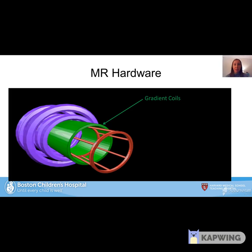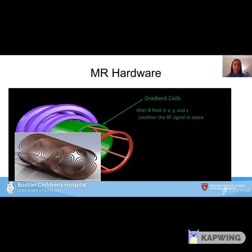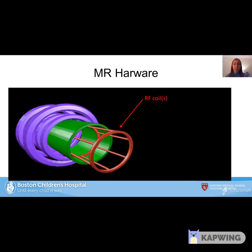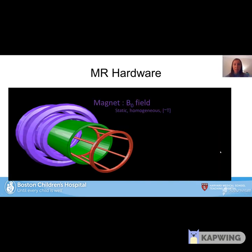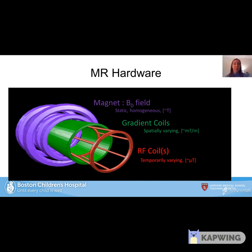The second component is the gradient coil, on the inside of the magnet. The gradient coil alters the magnetic field in the x, y, and z directions and is important for localizing the RF signal in space. The third component is the RF coils, which send and receive RF signals to and from tissues. To summarize: the magnet provides the static, homogeneous B-naught field operating on the order of tesla; the gradient coils are spatially varying at millitesla per meter; and the RF coils are temporally varying at micro-tesla.